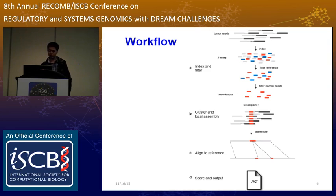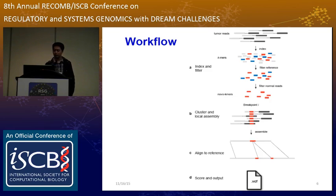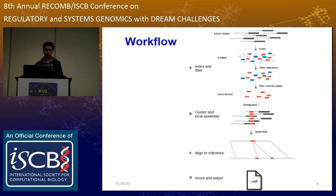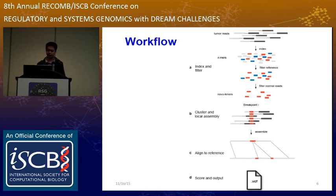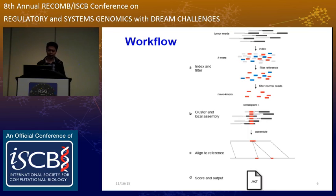For each cluster, we perform local assembly to get the contig of the sequence covering the breakpoint. After obtaining the contigs, we align the contigs to the reference genome using BWA to infer the structural variations. Finally, we developed a statistical model to score and rank variants and output a single VCF file.